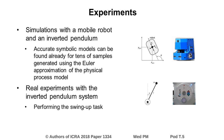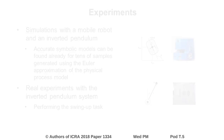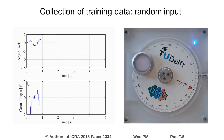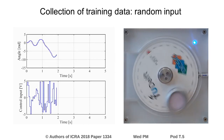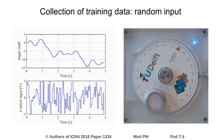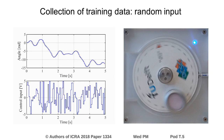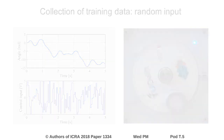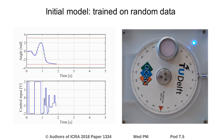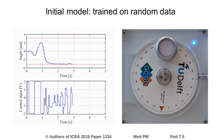Symbolic process models were used within a reinforcement learning controller to perform the swing-up task. Data was collected while applying random input to the system. Only five seconds of random interaction is sufficient to find a symbolic process model that can be used to perform the swing-up task successfully.